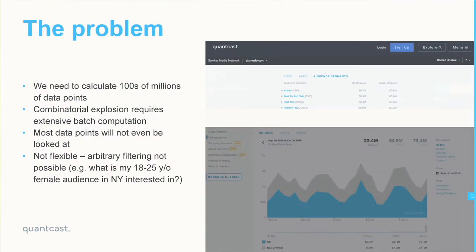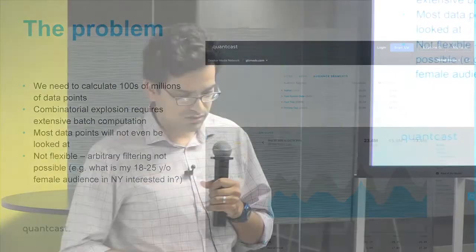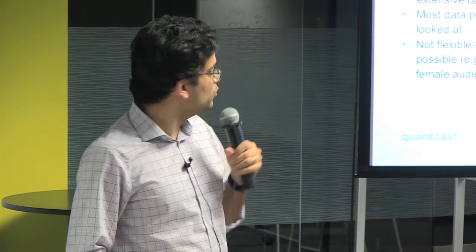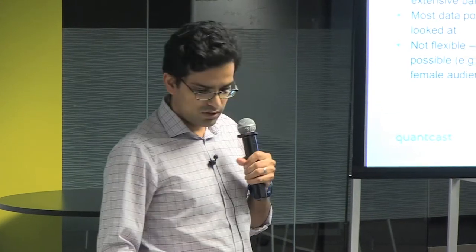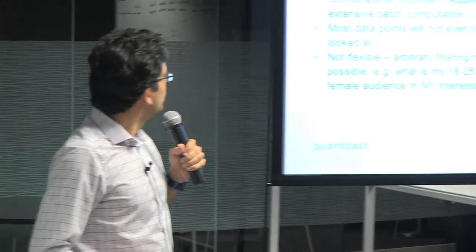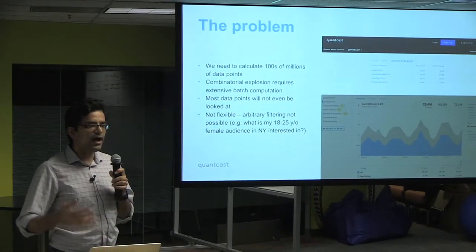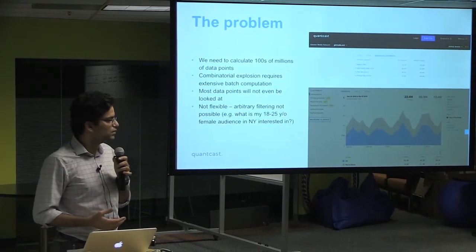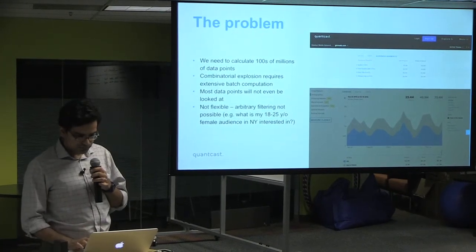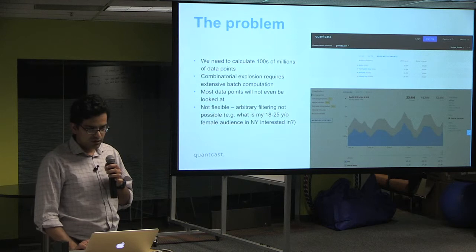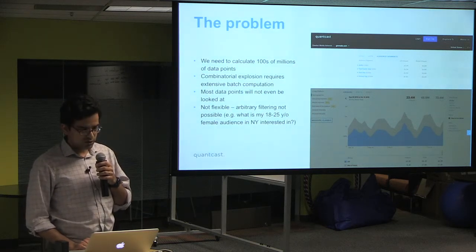So what's the problem that we're trying to solve? We get a lot of data from hundreds of thousands of publishers and across hundreds of millions of websites. We have to process that data to produce roll-ups for them — data points like reach numbers, page views, and demographic composition across a lot of different dimensions.